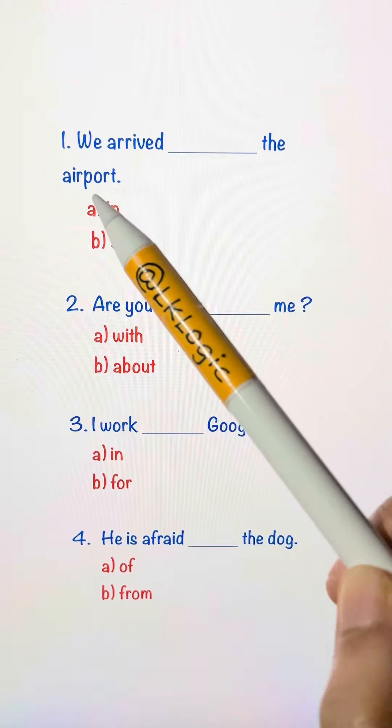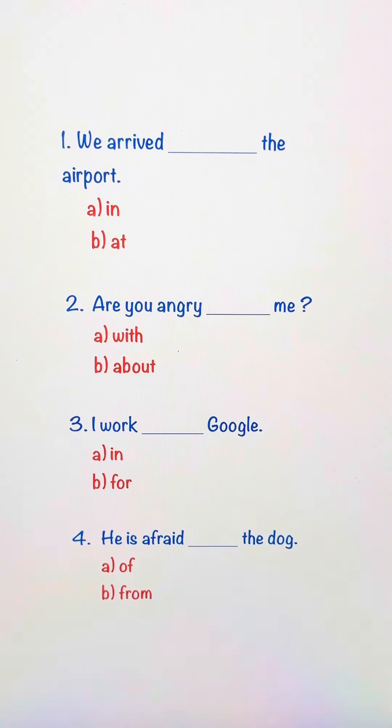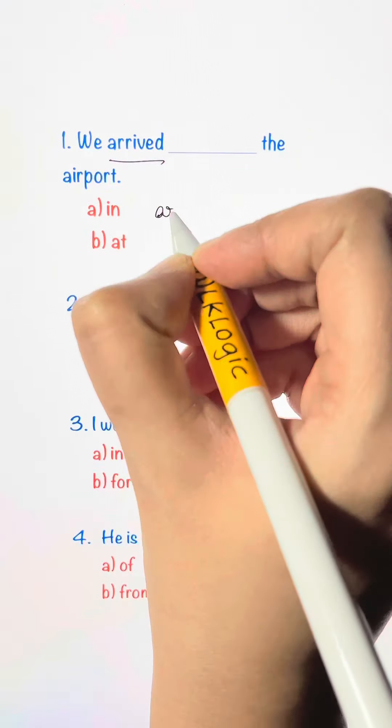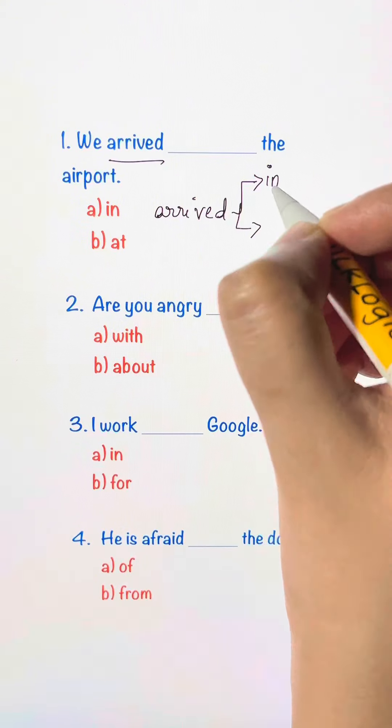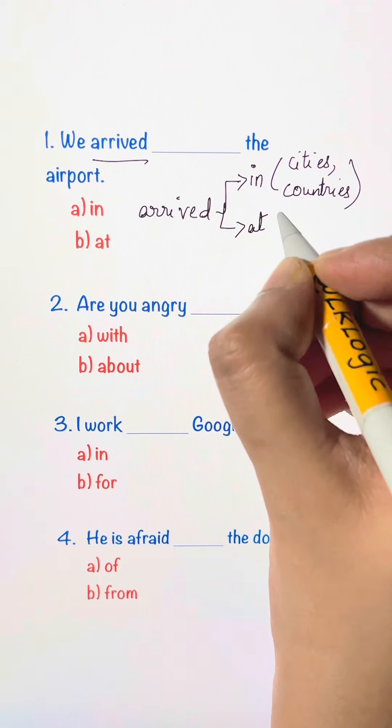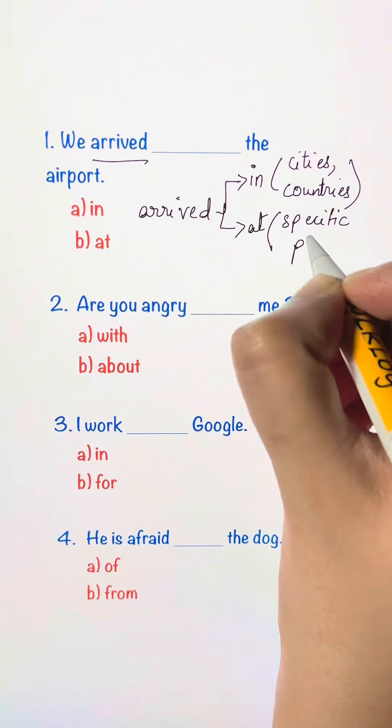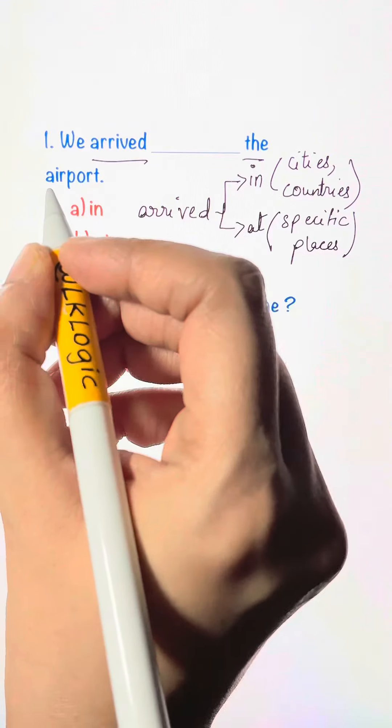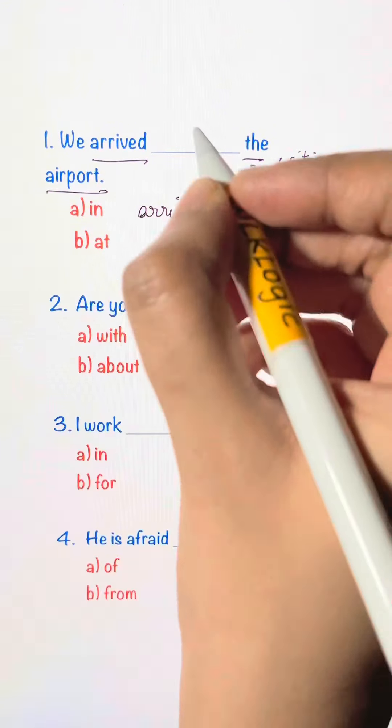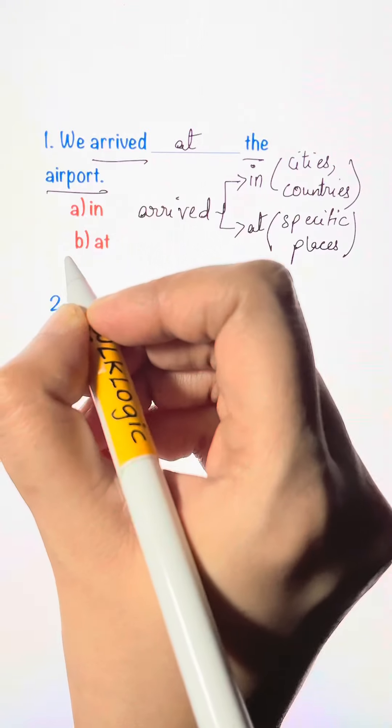We arrived blank the airport, in the airport or at the airport. So the keyword here is arrived. We say arrived in the cities or countries. We say arrived at specific places. So here we have the airport. It's a specific place. So we use at. We arrived at the airport.